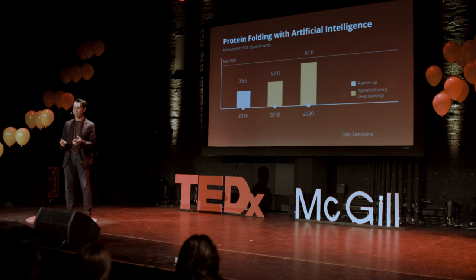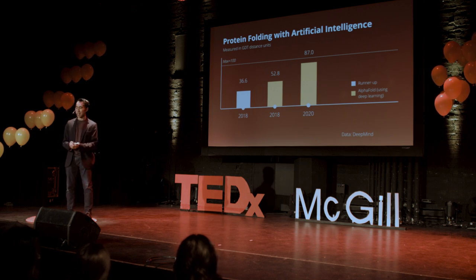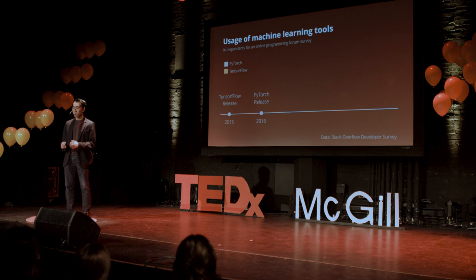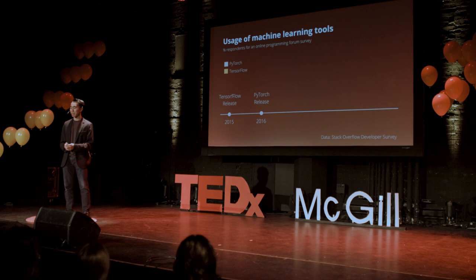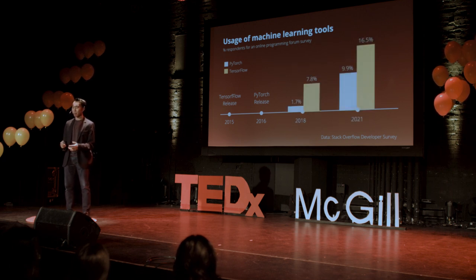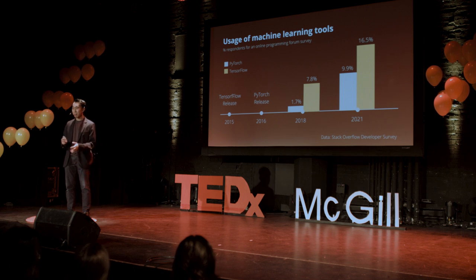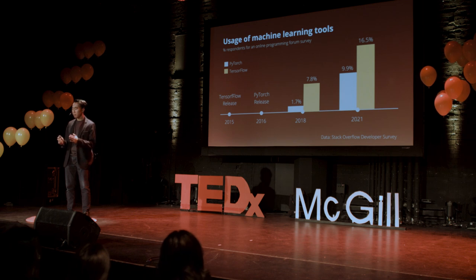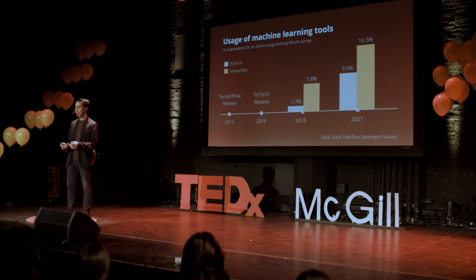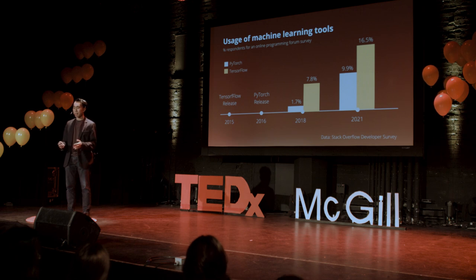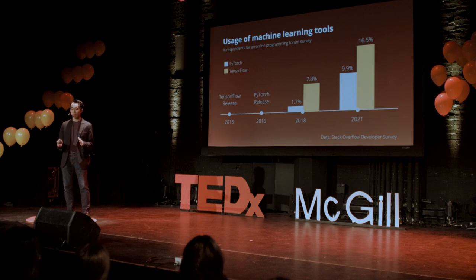Just how accessible is artificial intelligence to the everyday person? It turns out it's pretty accessible. Two of the most popular machine learning libraries, TensorFlow and PyTorch, were released in 2015 and 2016, and their usage has rapidly increased in the years that follow. In 2021, about one programmer in six has some experience with a machine learning library. In fact, you don't even need to learn how to code in order to work with artificial intelligence. Right now, there are many companies and cloud services that allow you to run AI models on the cloud for free, at no cost, without writing any code.